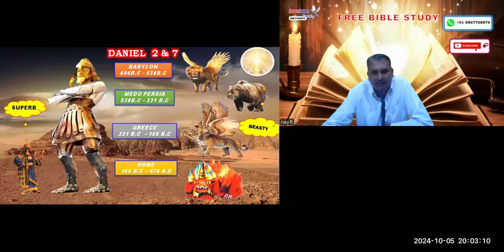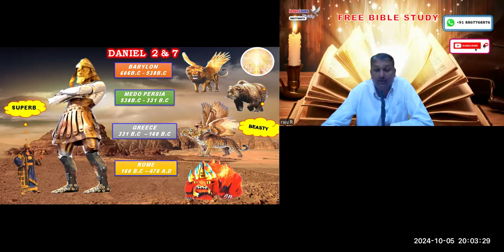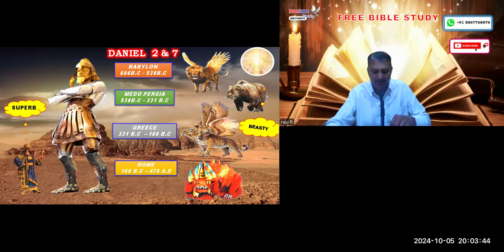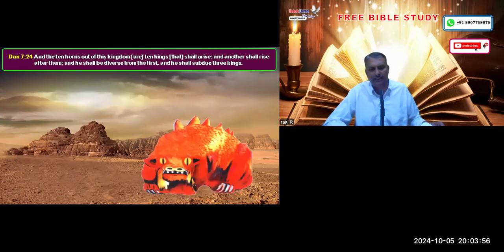We studied in our initial classes that these four beasts represent the four universal empires. This is also mentioned in Daniel chapter 2 in a multi-metallic human structure. Both signify the same thing — the four universal empires — one from a human standpoint, the other from God's standpoint. From the human standpoint it is a beautiful government, but from God's sight it is a beastly, ferocious empire destroying people's lives. Our main focus is the fourth beast and the little horn rising upon its head.